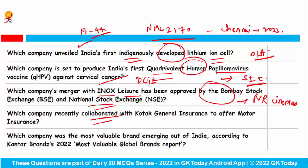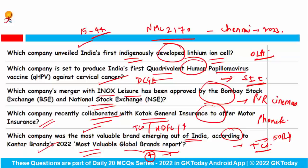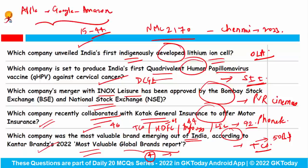PhonePe has collaborated with Kotak General Insurance to offer motor insurance. Which company was the most valuable brand emerging out of India? According to the Kantar BrandZ 2022 Most Valuable Global Brands report, TCS is the most valuable Indian brand worth $50 billion, ranked 46th. Four Indian companies featured: TCS (46th), HDFC Bank (61st), Infosys (64th), and LIC (92nd). The top three globally were Apple, Google, and Amazon.